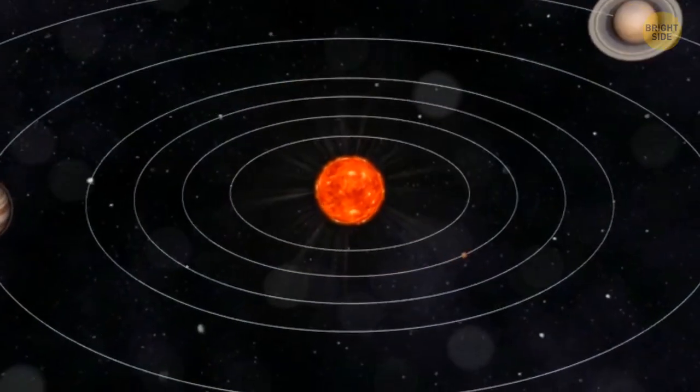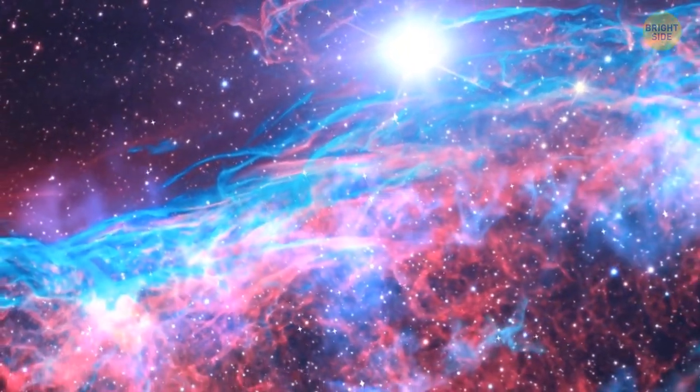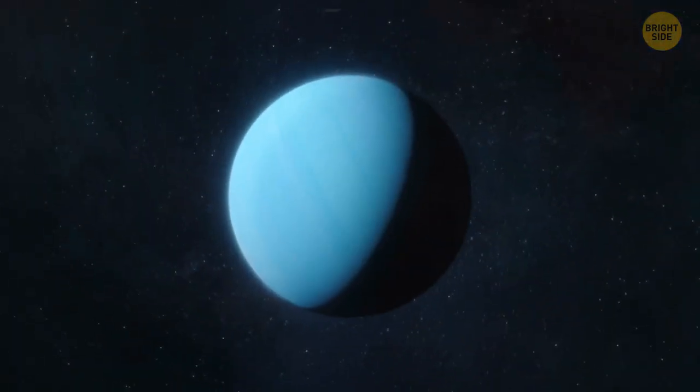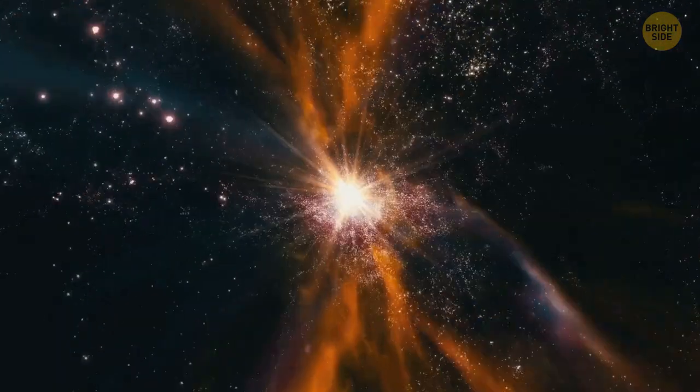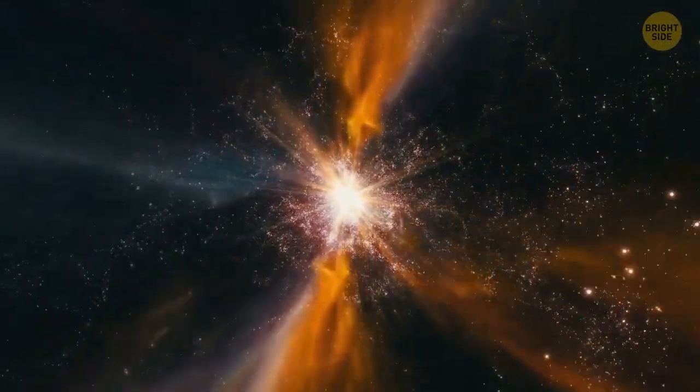All the planets in our solar system spin in the same direction because they were formed from one protoplanetary cloud, except for Uranus and Venus. They have probably had some strong impact on them that made them spin in the opposite direction.